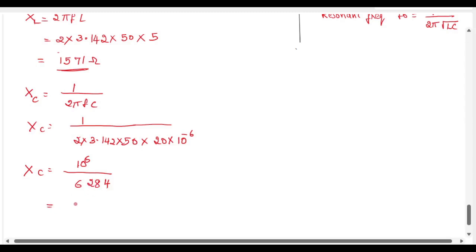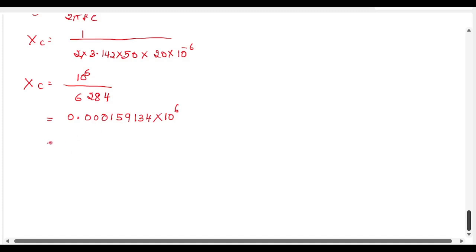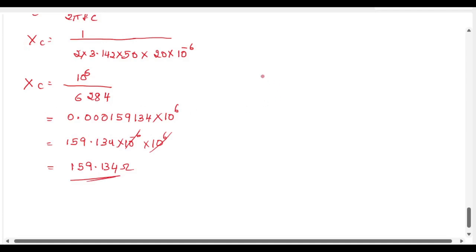1 divided by 6284 can be written as 0.000159. Multiplied by 10 to the power of 6, the powers cancel, giving us a value of capacitive reactance XC equal to 159.134 ohms. So we now have both XC and XL.